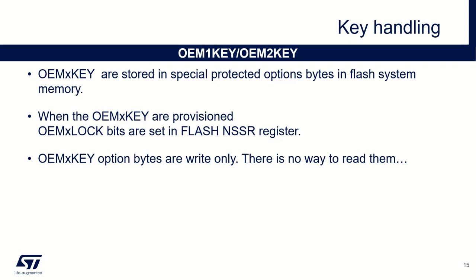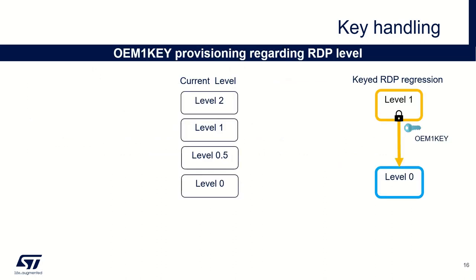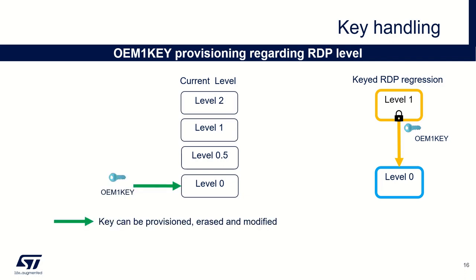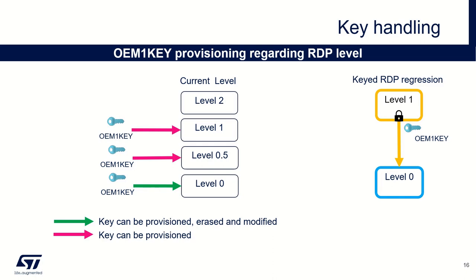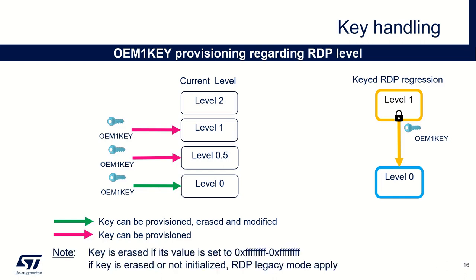Let's talk now about key management. The keys are statically stored in a protected option byte. Once written, those key values can't be recovered from the device. But you can check if a device has been provisioned using the OEM lock bit in the flash NSSR register. Regarding provisioning rules for the OEM1 key: if my target is in RDP level 0, I can provision, erase and modify the OEM1 key. But if my target is in RDP 0.5 or in level 1, I can only provision the OEM1 key — impossible to delete or modify an already provisioned value. And in level 2, nothing can be done. Erasing a key consists in setting all its 64 bits to 1. If you erase a key, you are in RDP legacy mode, meaning the regression is always possible.